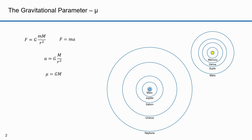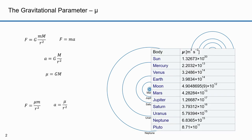In the case of our solar system, the dominant mass is the Sun's mass. Mu is in units of meters cubed over seconds squared. Newton's gravitational equation would be F equals mu times M over R squared, and the acceleration equation would be mu over R squared. Here are gravitational parameters for the planets — I got these from Wikipedia, and they vary quite a bit.